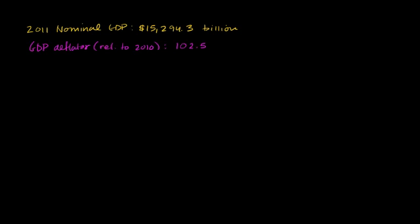Let's say the 2011 nominal GDP is $15,294.3 billion. This is actually the advanced estimate of what 2011's GDP was in the fourth quarter. They took the fourth quarter number and annualized it to get to this $15,000 billion, which is essentially $15.2943 trillion of GDP.